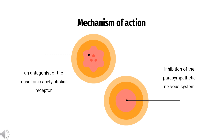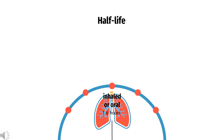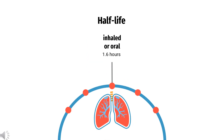Thus, administration of Ipertropium stops the activity of acetylcholine in the smooth muscle, preventing the contraction and producing relaxed airways. Half-life: Ipertropium presents a short half-life of about 1.6 hours.